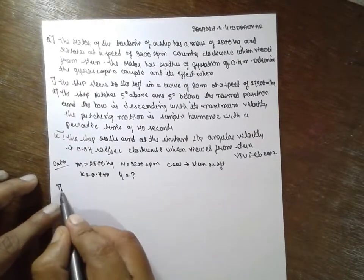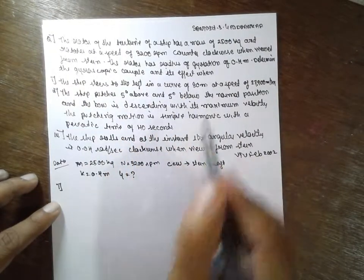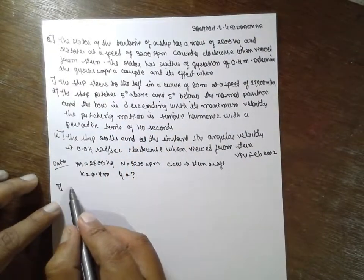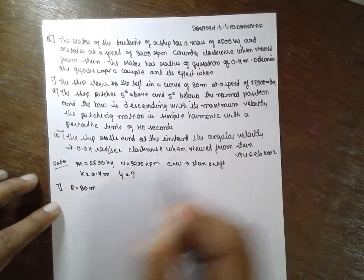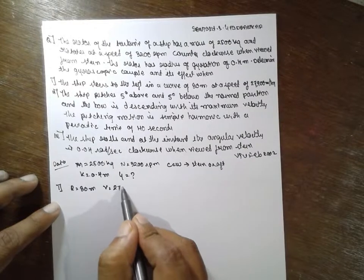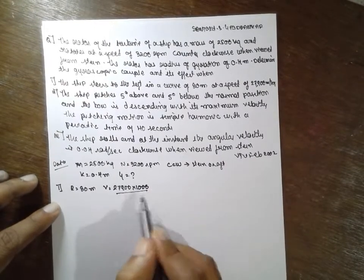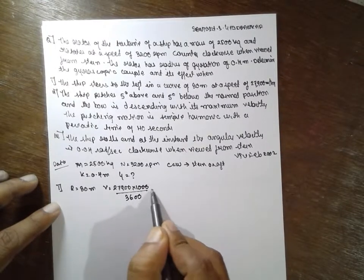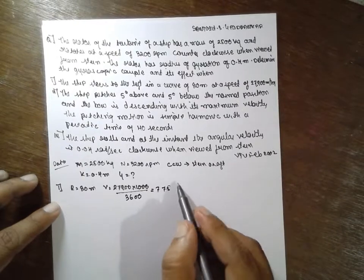First condition: the ship's stern to the left in a curve 80. R is given 80 meter and velocity is given 27900 into 1000 divided by 3600. You will get 7.75 meter per second.